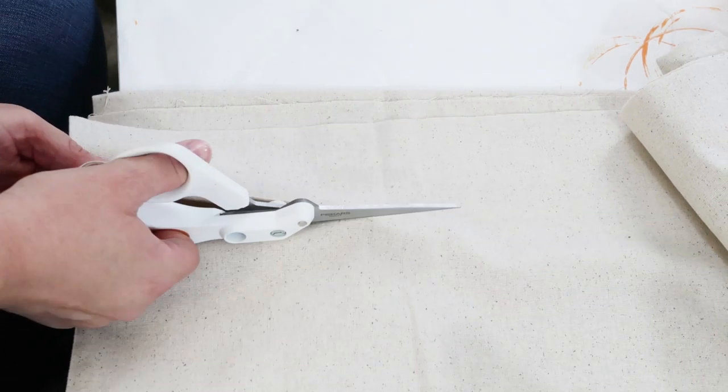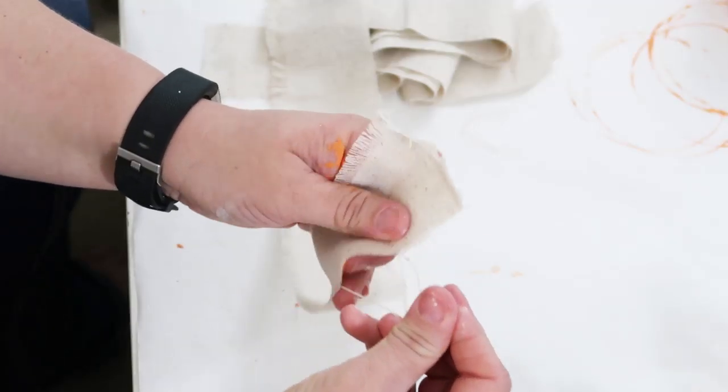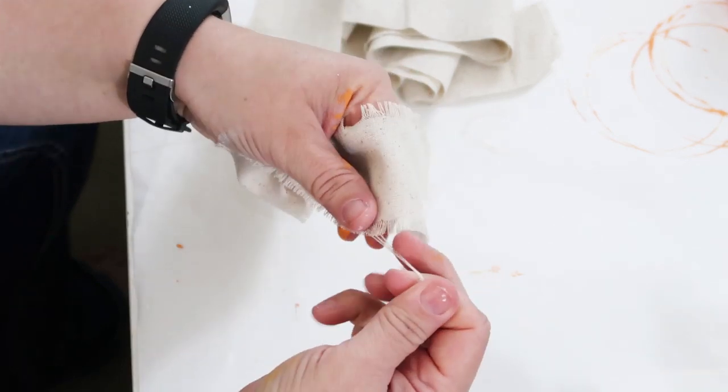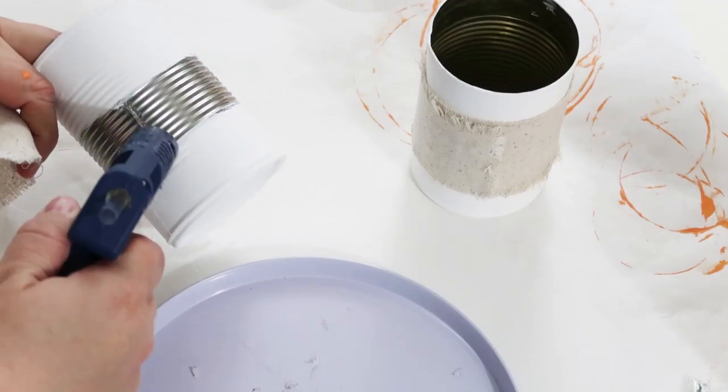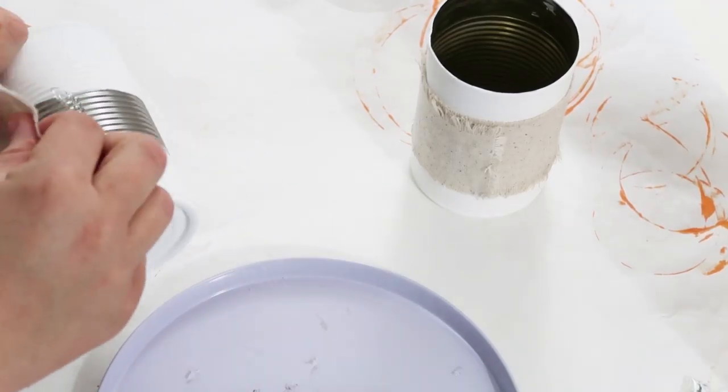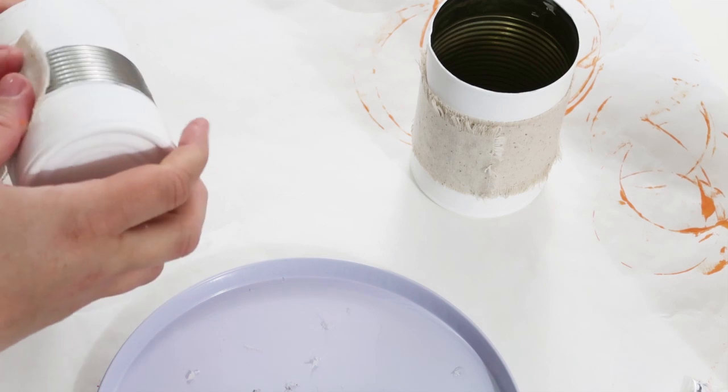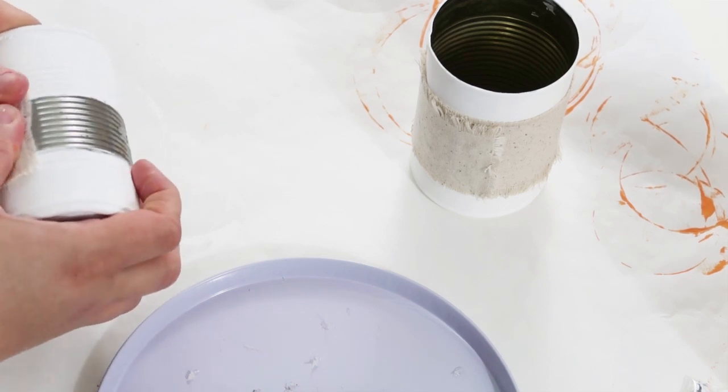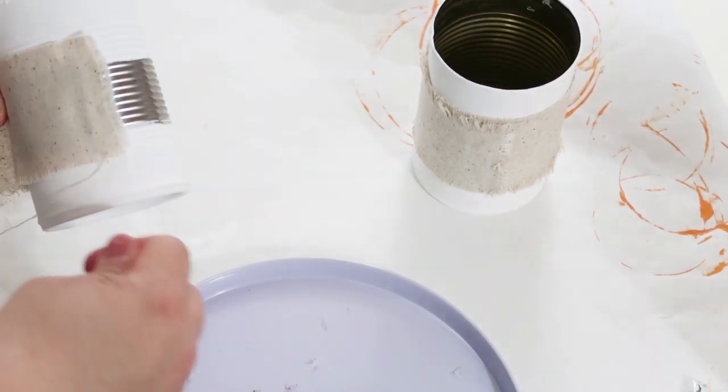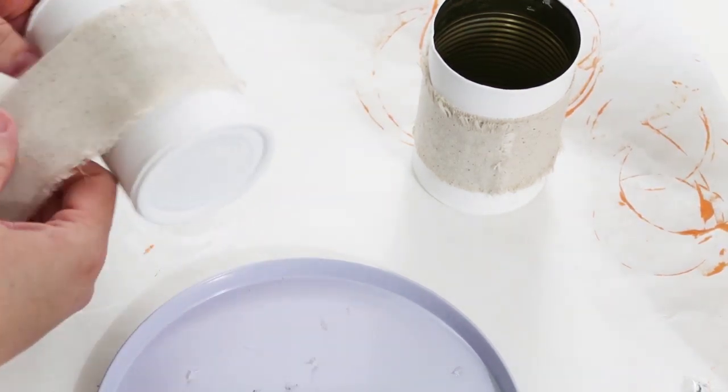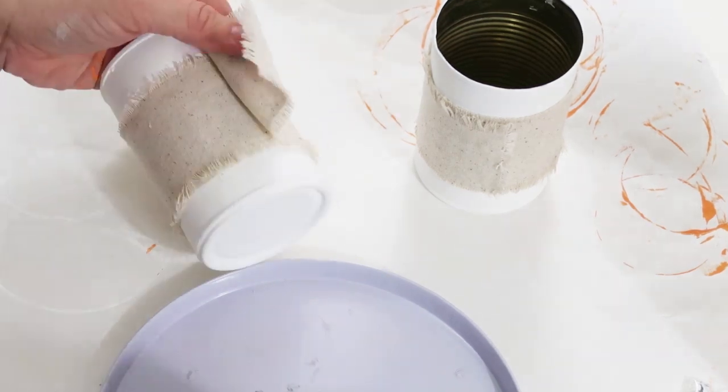I'm going to take some drop cloth that I had around our house. I cut them into strips about two inches wide. I went ahead and frayed the edges, added a little hot glue and just simply wrapped it around and then I'm going to hot glue it in place at the end.